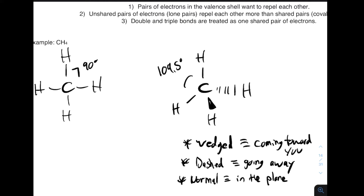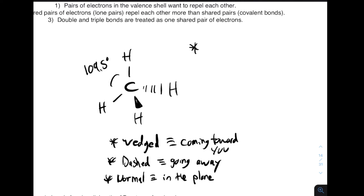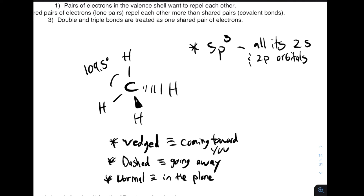In the 3D case, the bonds wouldn't be 90 degrees apart — they would be as far apart as possible, which is 109.5 degrees. This carbon is sp3 hybridized, bonded to three atoms with no lone pairs, so it has four hybridized orbitals. All its 2s and 2p orbitals have mixed, and it has a tetrahedral geometry.